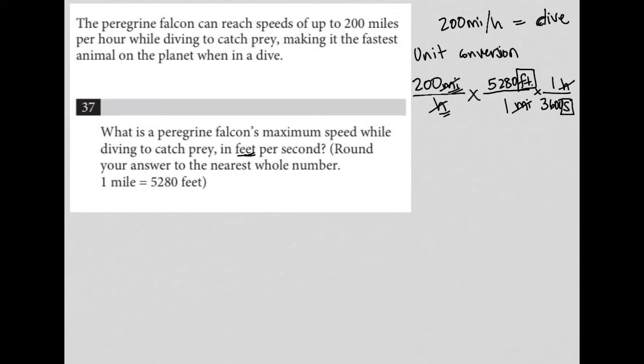Now comes the calculator. And so in my calculator, I'm going to multiply the numerators together. So I have 200 times 5,280, and I get 1,056,000. And my denominator is just the 3,600.